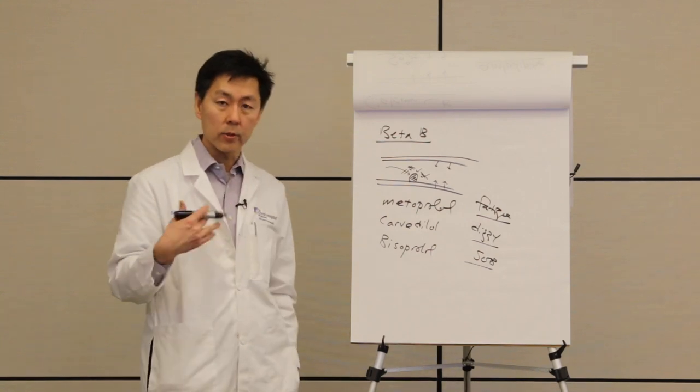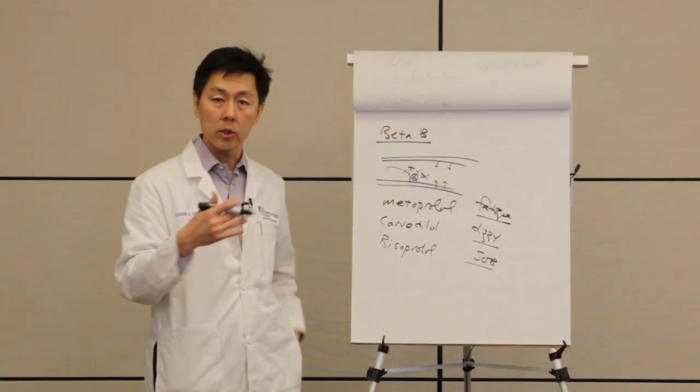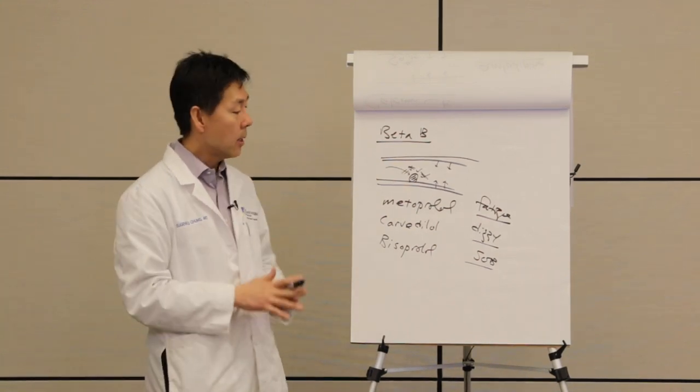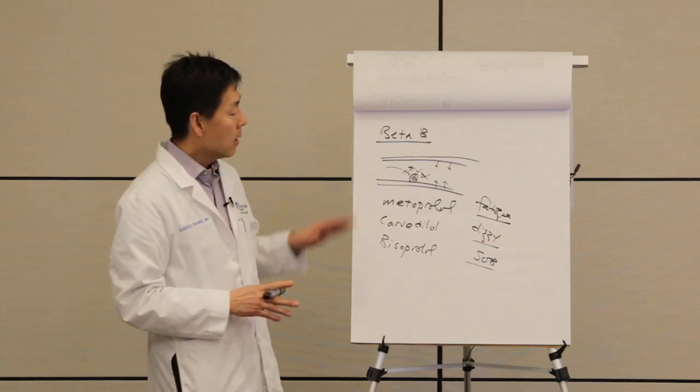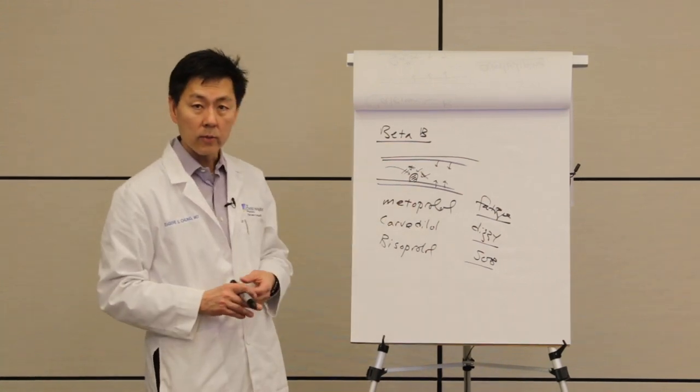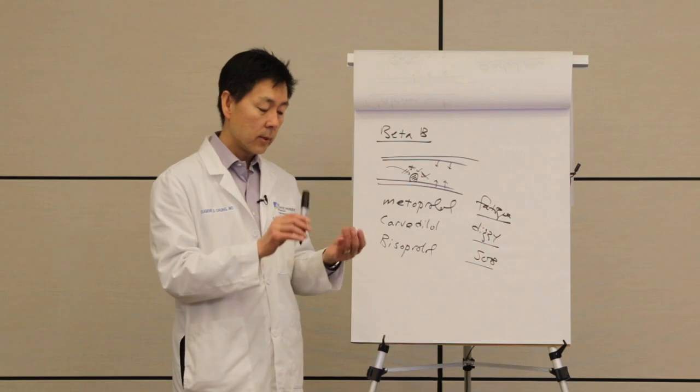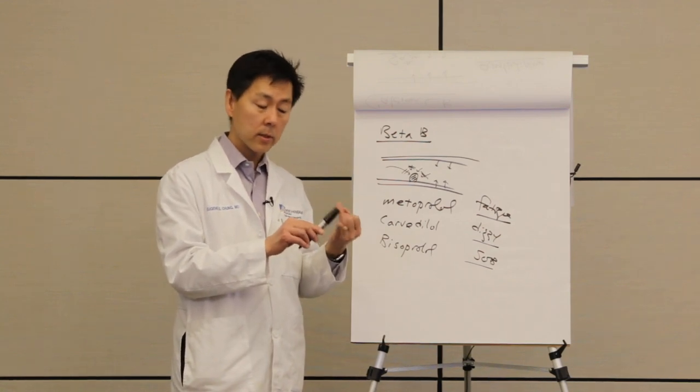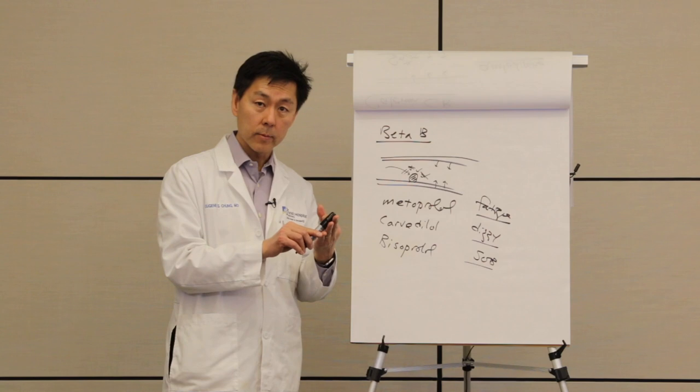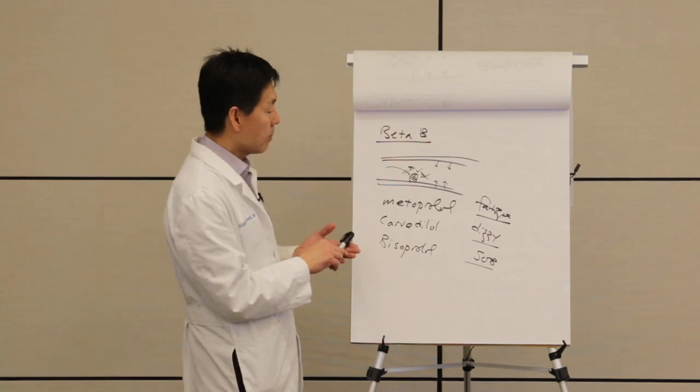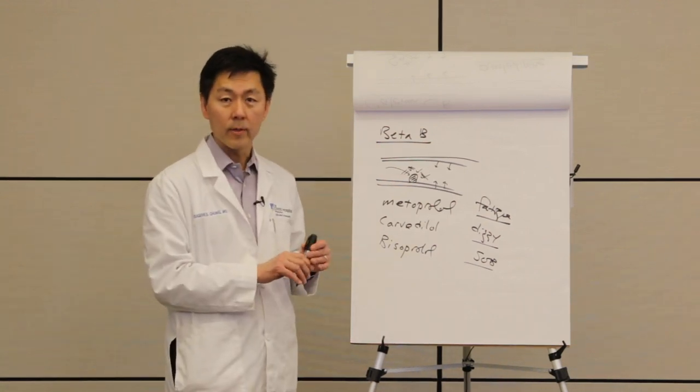So all these drugs have potential side effects and relationships with other drugs. They interact, so you have to keep an eye on it. But these are the major categories of drugs that I wanted to highlight for you. ACE inhibitors, ARBs, aldosterone inhibitors, calcium channel blockers, and beta blockers. Thank you very much.